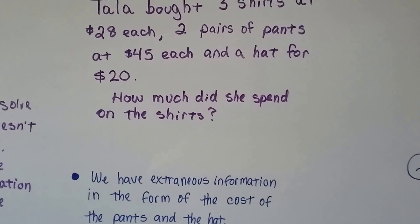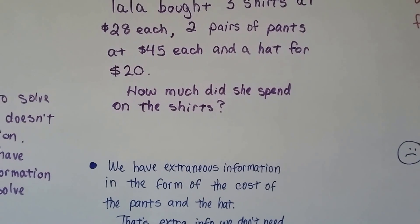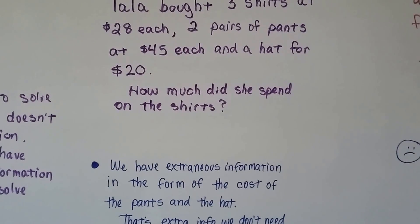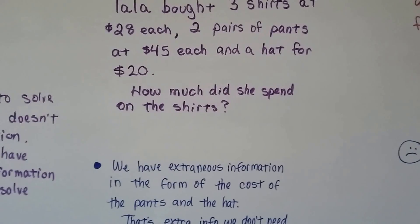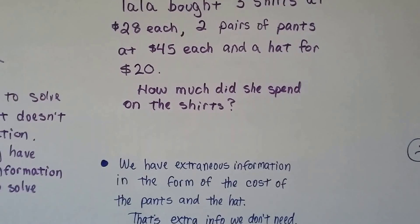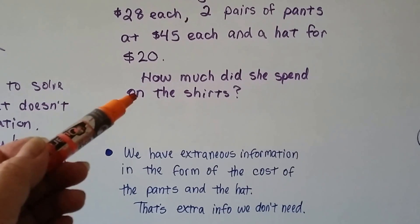We have extraneous information in the form of the cost of the pants and the hat. That's extra info we don't need. Three shirts at $28 is what we need. It's asking how much did she spend on the shirts.